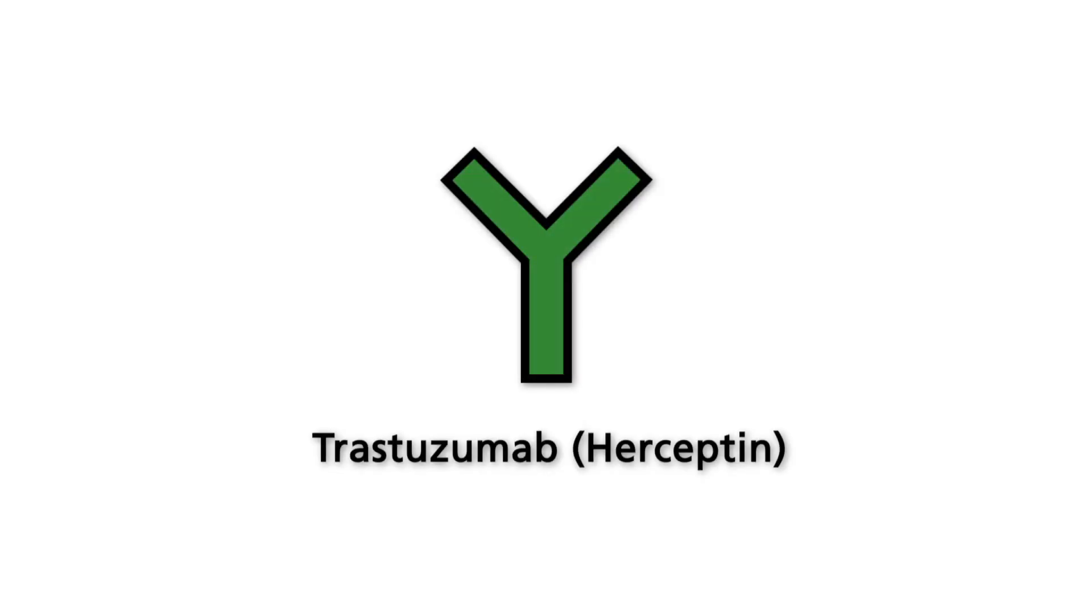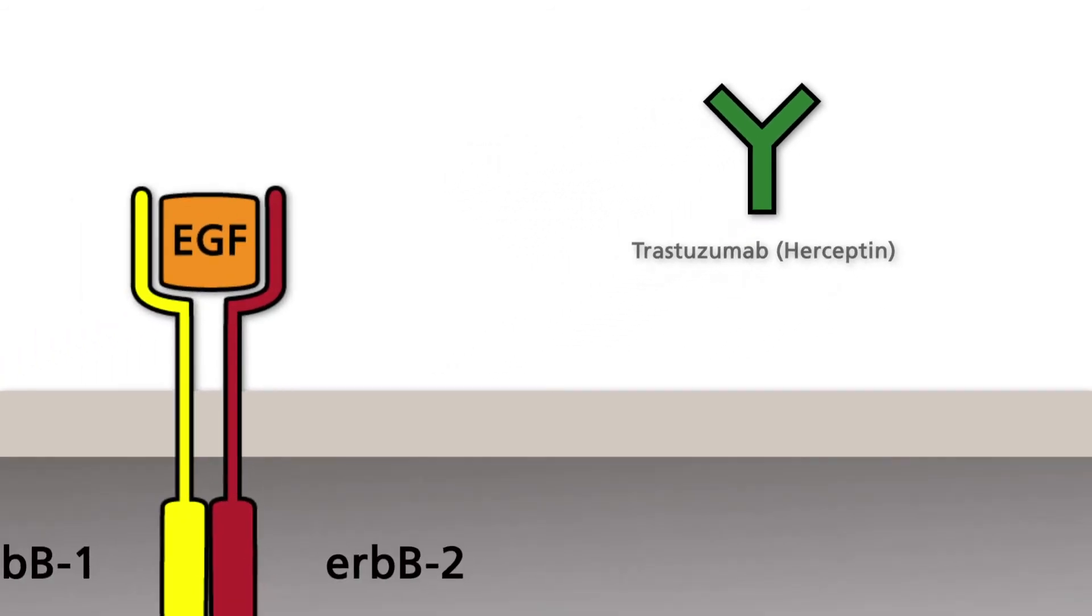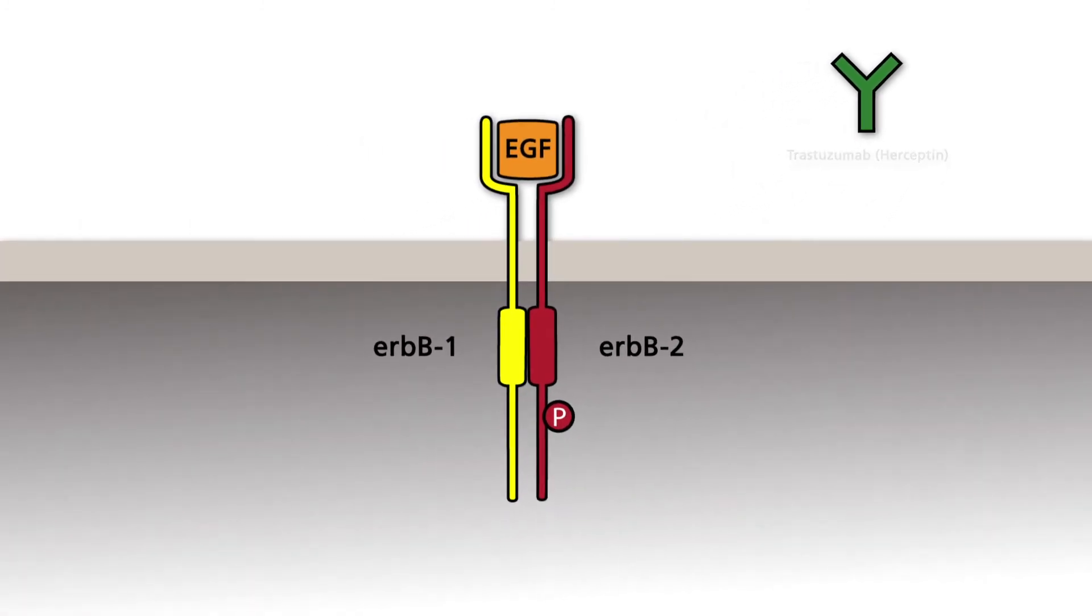Trastuzumab, registered trade name Herceptin, was the first antibody to be developed to treat tumors with activated EGF receptors. Of all the antibodies used in cancer therapy, Trastuzumab is the best characterized.